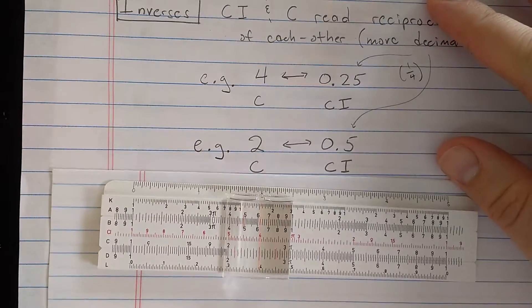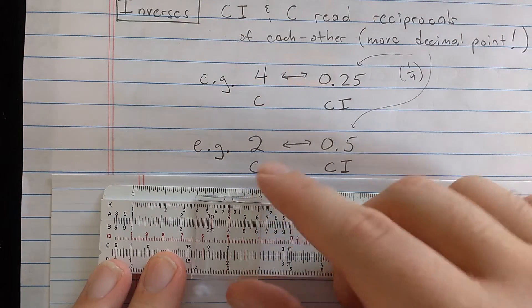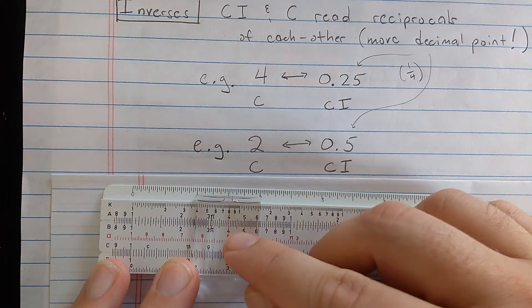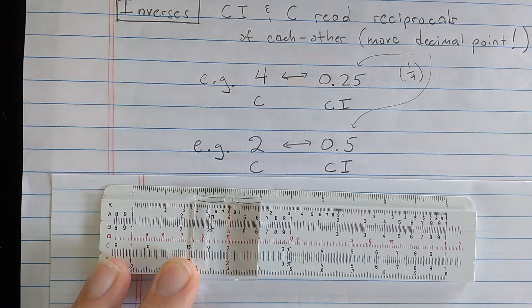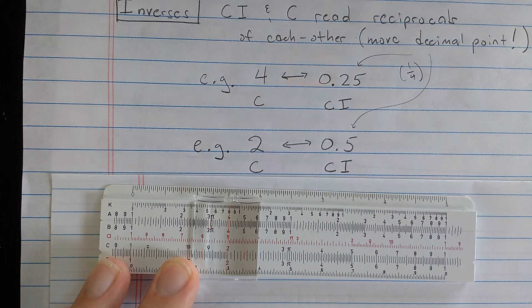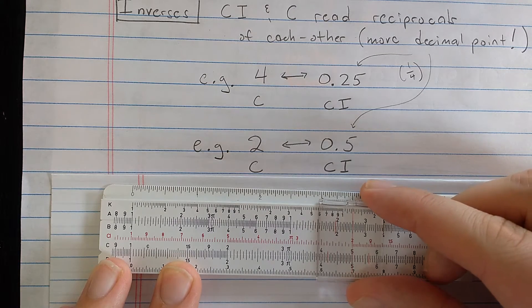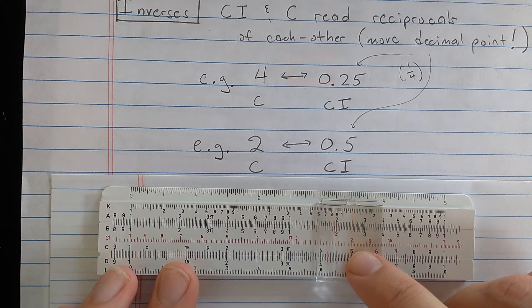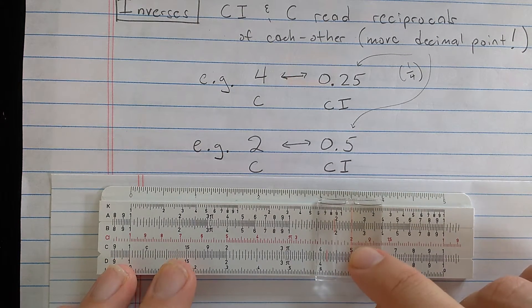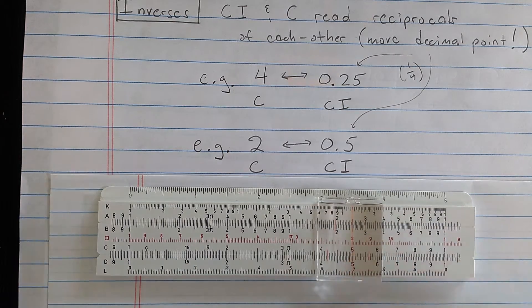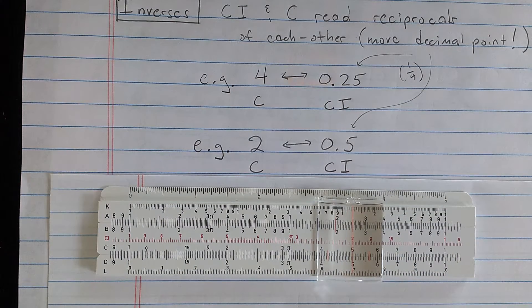Another example could be 2 and 0.5. So if I found 2 on the C scale, I would see 5, which I interpret as 0.5 on the CI scale. Or if I found 5 on the C scale, I would see 2, which I would interpret as 0.2 on the CI scale.